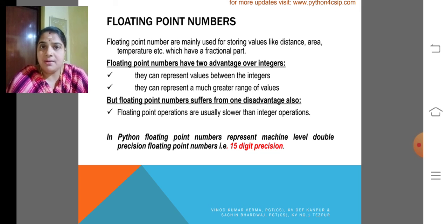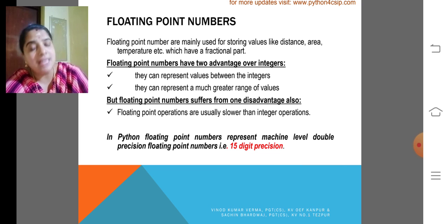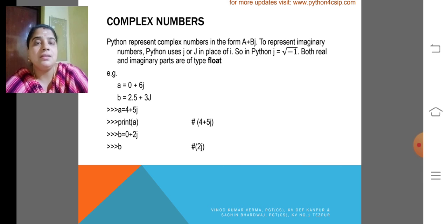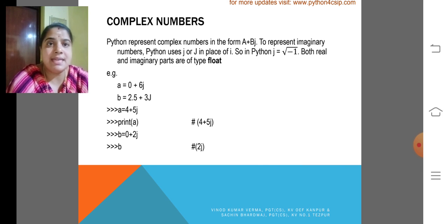Dear children, I think you are all clear about what is integer type numbers and what is floating point numbers. The next one is complex numbers.